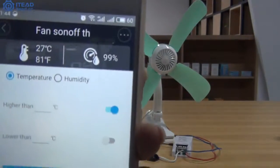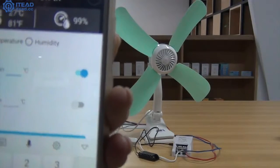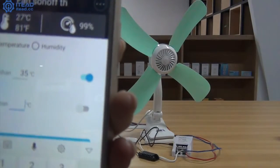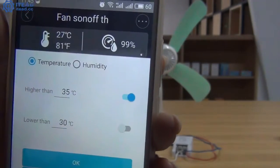Switch the auto button, set the temperature boundary conditions. Higher than 35 degrees centigrade and lower than 30 degrees centigrade. Click OK.